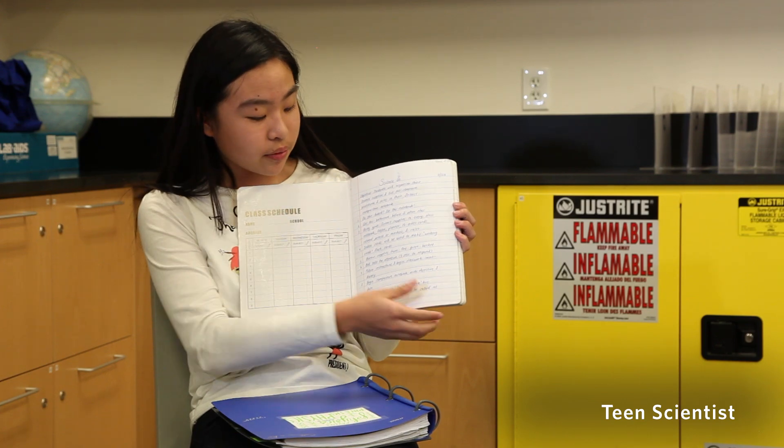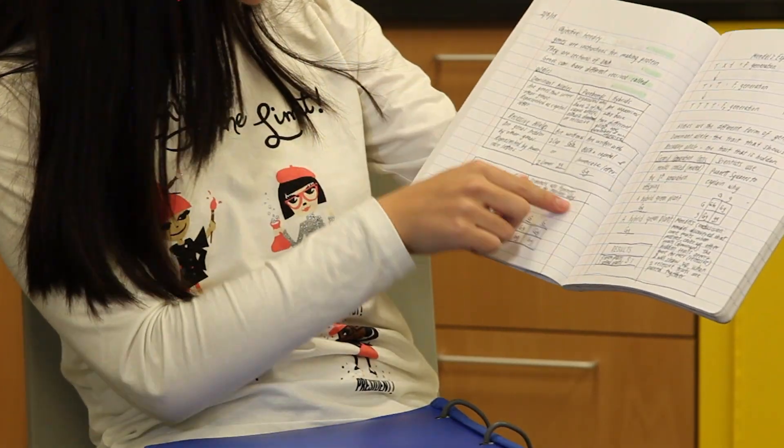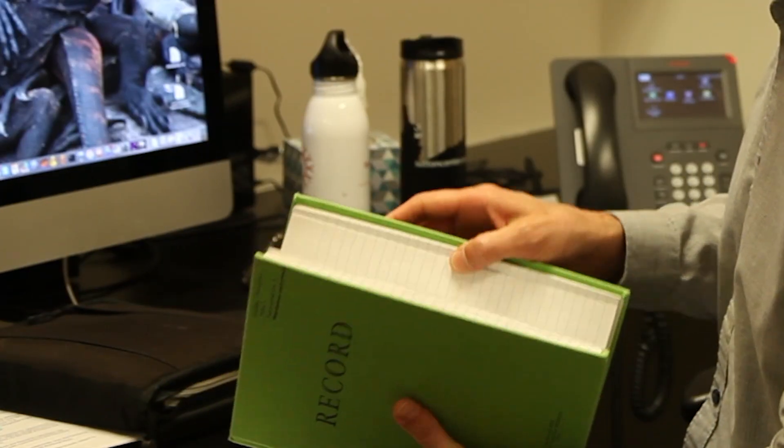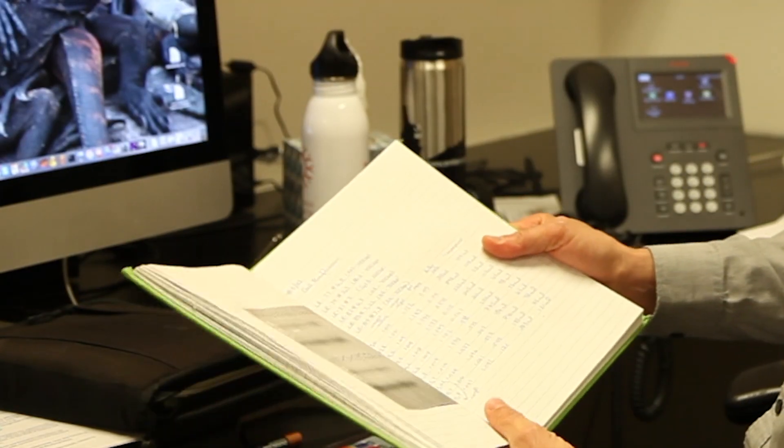It's very important to keep a science notebook. I write down the objective, the procedure, materials we need. A lot of little suggestions here and there, what to do, what not to do. That's our record of all the different experiments we do. And it's critical that we are able to redo everything.